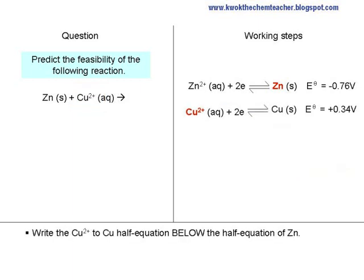Write the copper-2-plus to copper half equation below the half equation of zinc. Check that copper-2-plus and zinc are diagonal to each other.